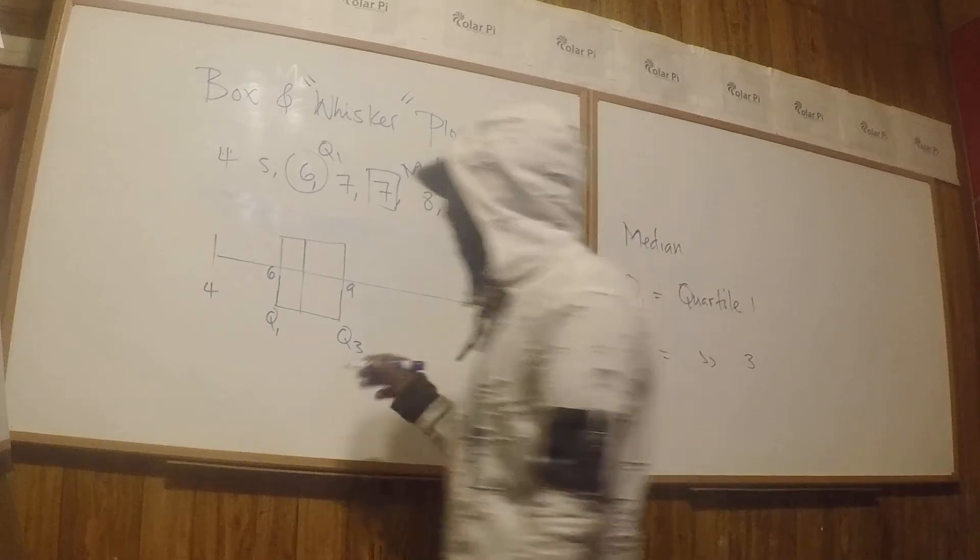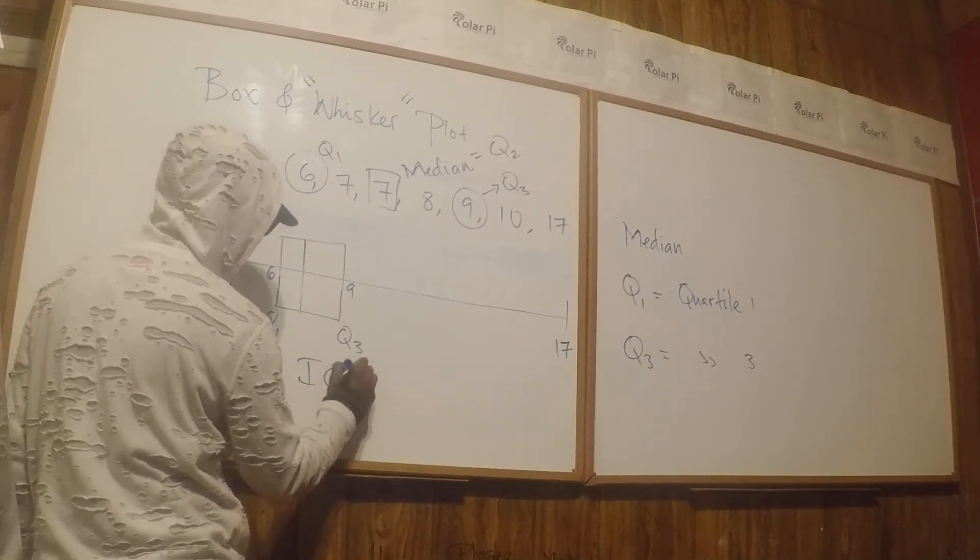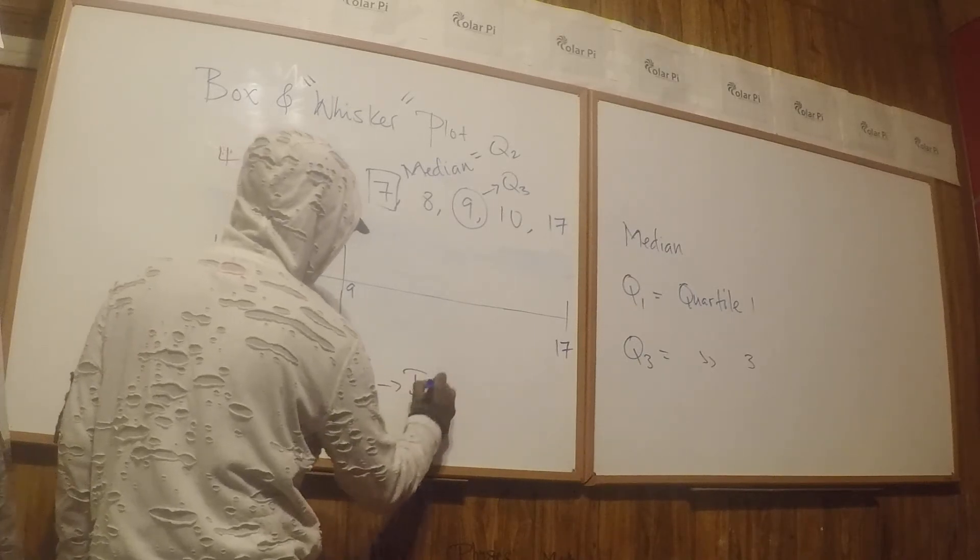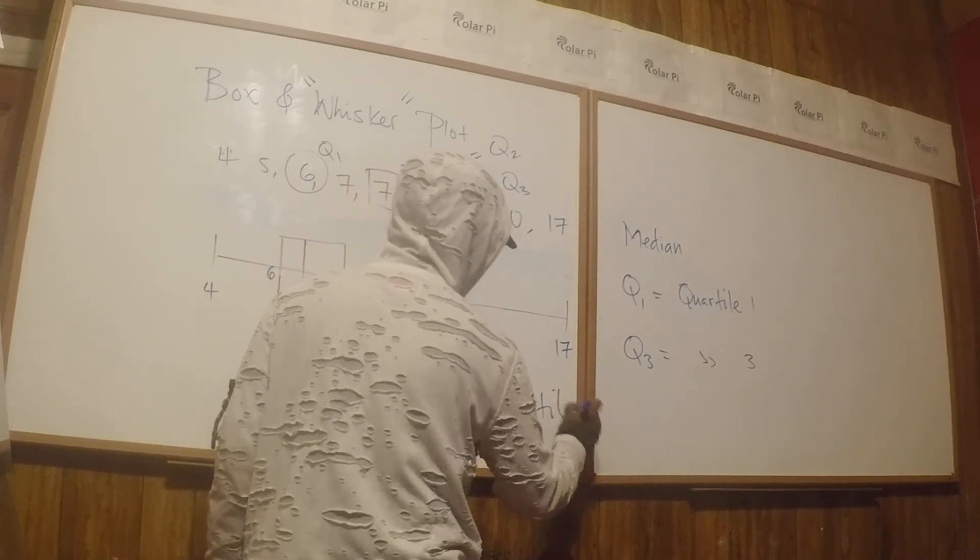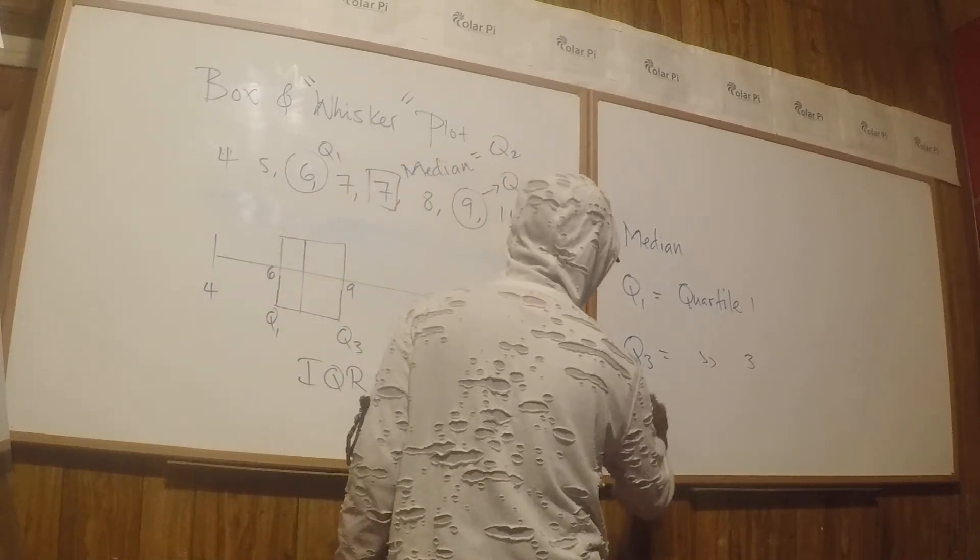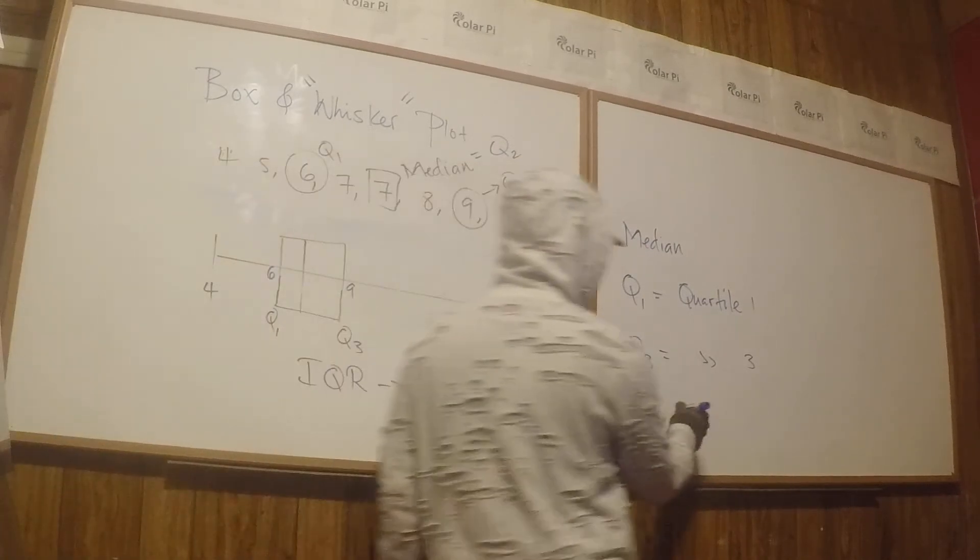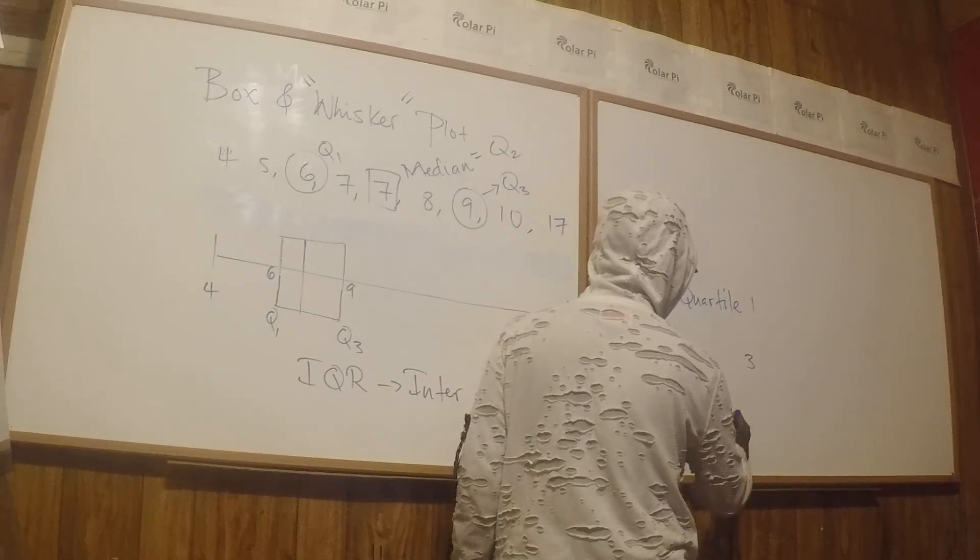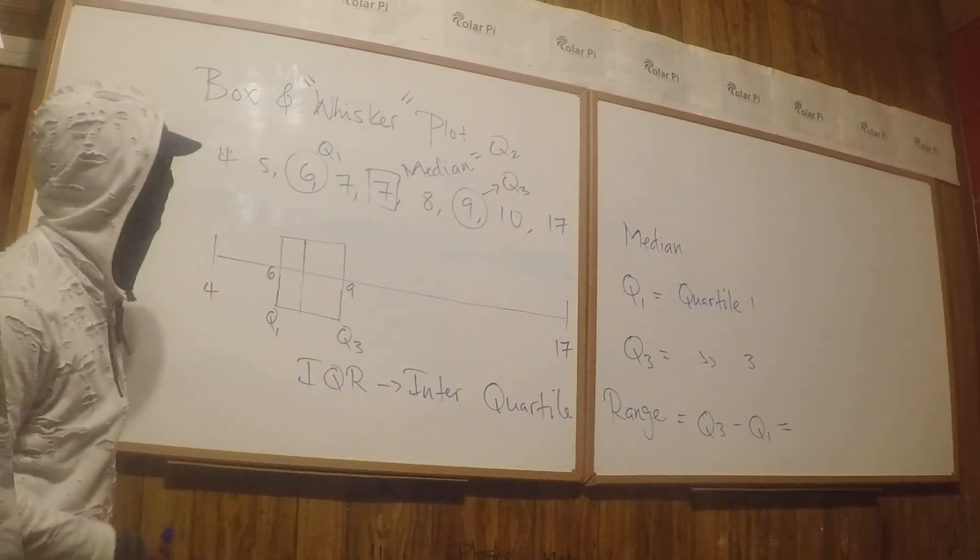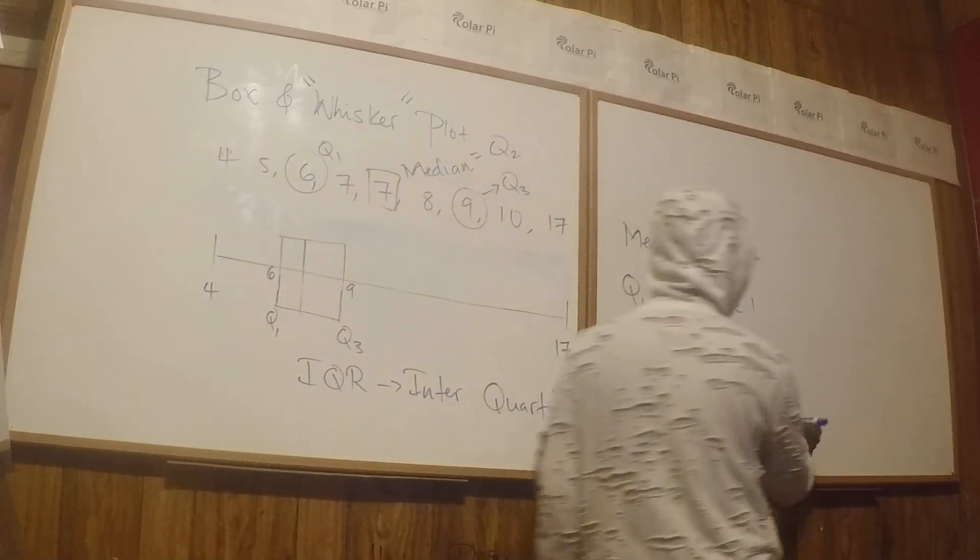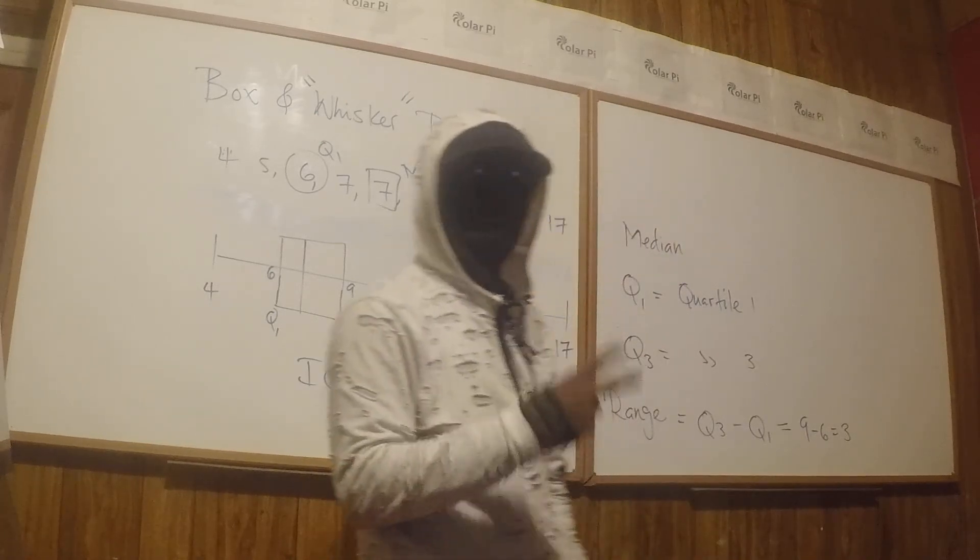Last thing before I leave is IQR. IQR is what's called interquartile range. The interquartile range is the difference between Q3 and Q1. So this is Q3 minus Q1, and so that is in our case 9 minus 6, which is 3.